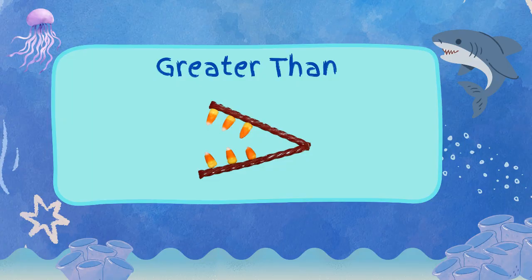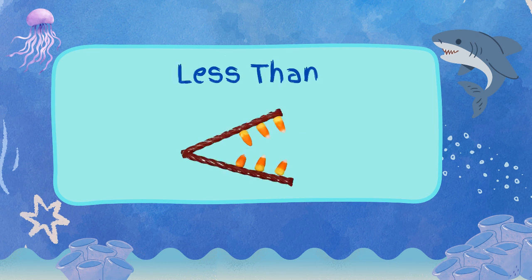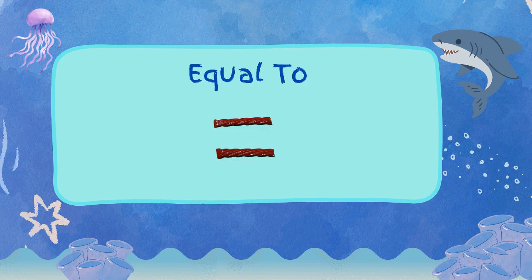In order to make the greater than symbol, you need two Twizzlers and six candy corn. The less than symbol faces the other direction. You still need two Twizzlers and six candy corn. Sometimes you're comparing two numbers that are equal. So grab one Twizzler, cut it in half, put one on the top and one on the bottom to make an equal sign.